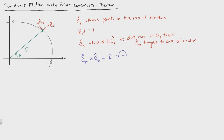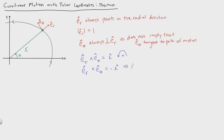So if er is rotating in this direction and we do that same cross product and get a negative k, what that means is that the object is rotating in this direction. These are just more formally mathematical definitions on how to define e theta.